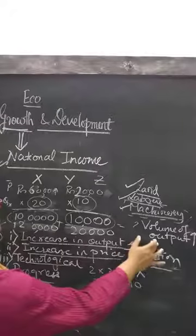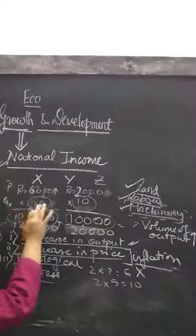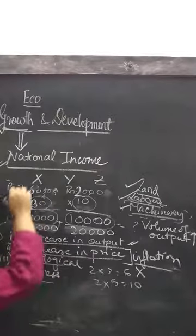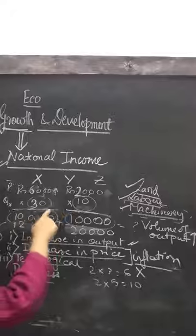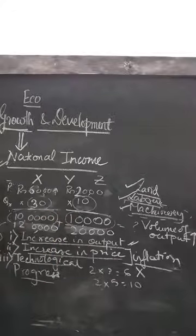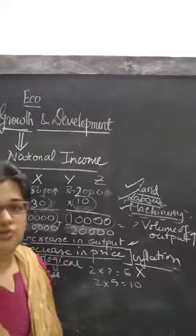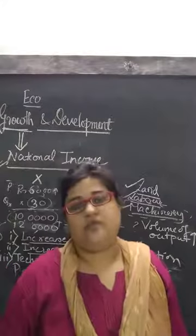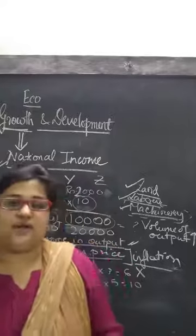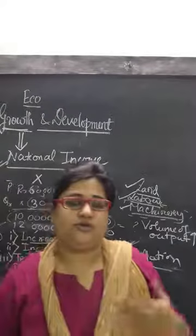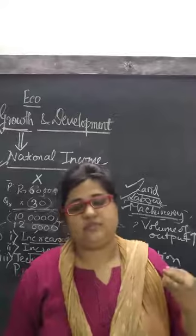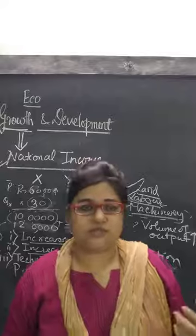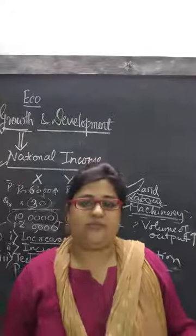If volume of output increases — say production of eggs goes from 20 to 30 — the multiplication of existing price and quantity gives a higher value, because if the economy generates more output the expected income from sale will be much more. If I am producing 5 units I can only sell 5 units and earn income, but if I produce and sell 10 units I will be earning more income.